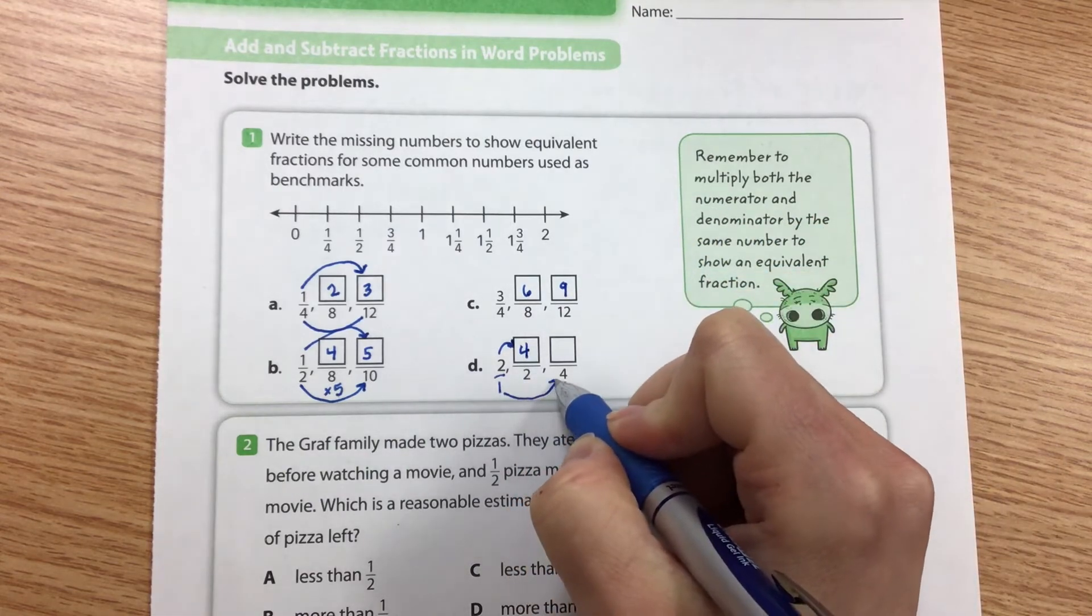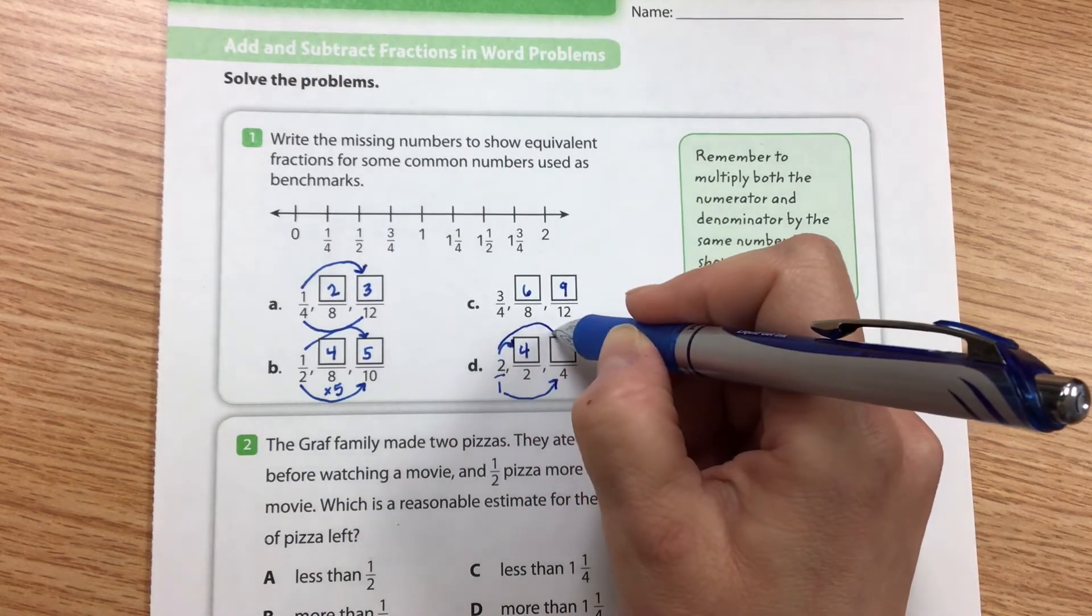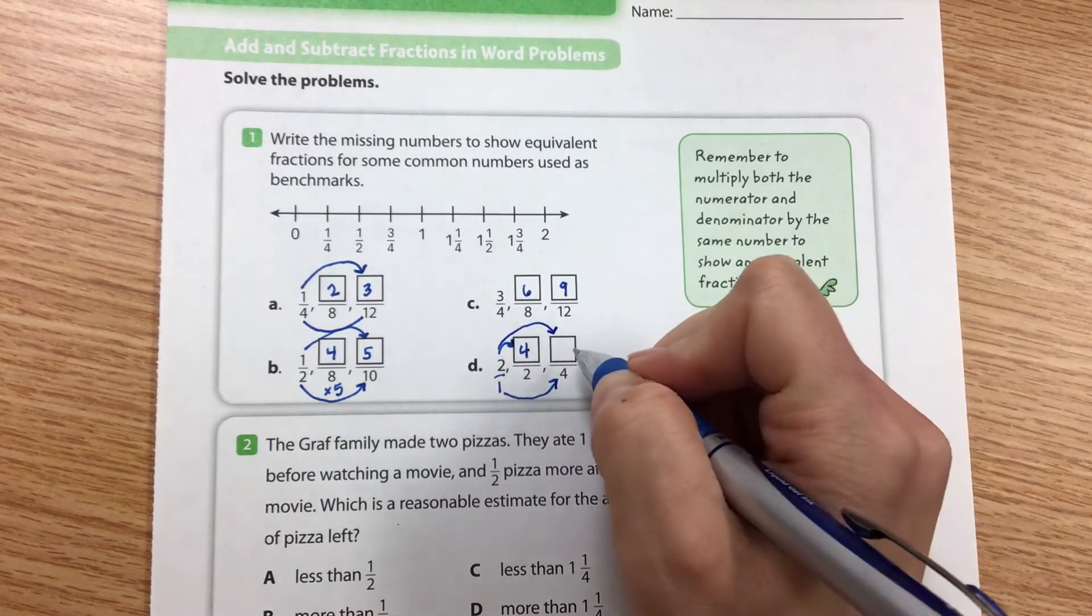To turn one into four we'd multiply it by four. So two times four would give us eight.